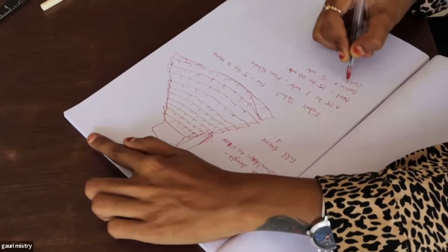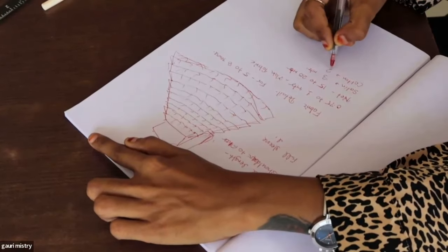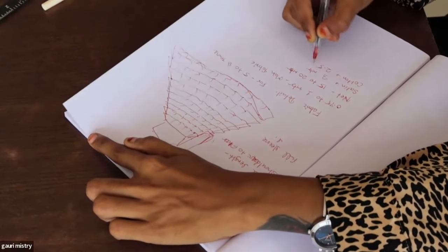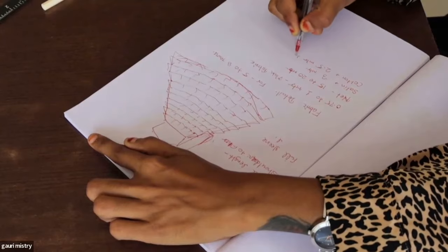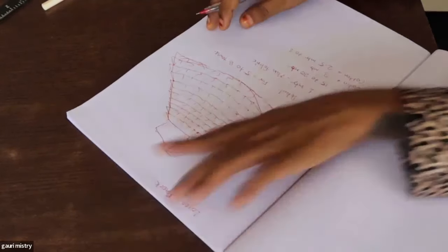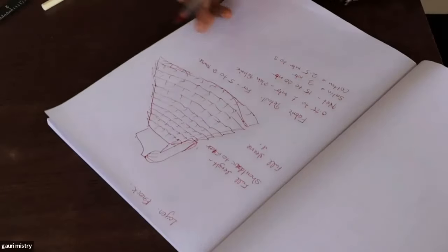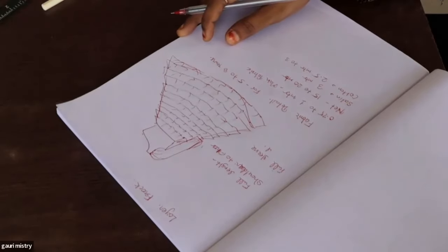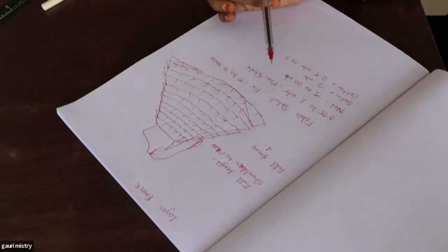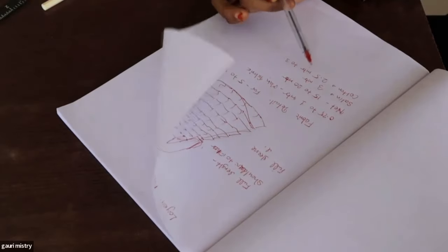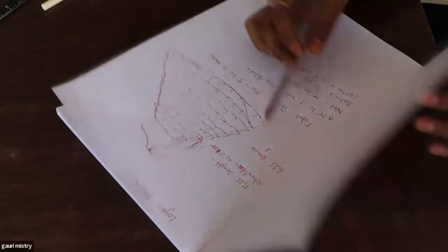Cotton lining, 2.5 meter. 2 to 3 meter cotton ashtar chahiye hoga. Toh yeh sare fabric hame chahiye aaj ki class me. Main fabric, net, satin, cotton.